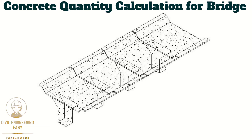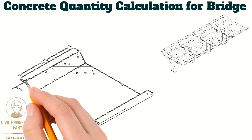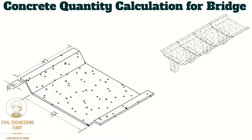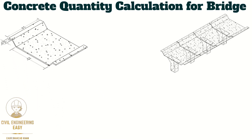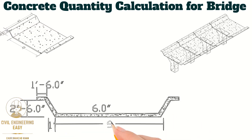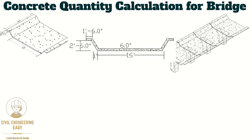Let's try to understand the drawing of the bridge. Consider the top view of the bridge slab. The width of the slab is 15 feet and the length of the slab is 14 feet. Taking the cross section of the slab, the thickness of the slab is 6 inches. The slope portion of the slab is projected 1 foot on each side, and the depth of the slope portion is 2 feet and 6 inches.